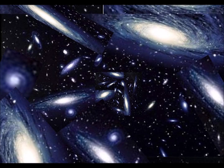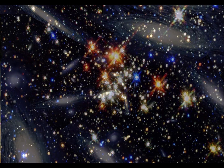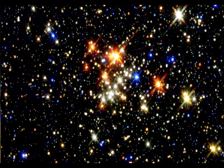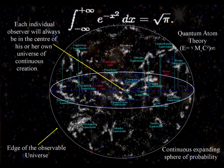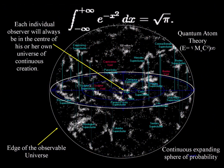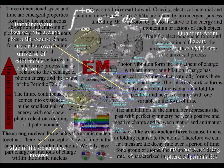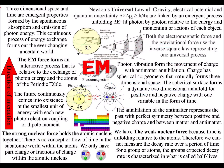We have spiral galaxies and spherical stars from one edge of the visible universe to the other. This points very strongly towards one universal process for the whole universe.